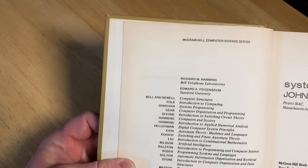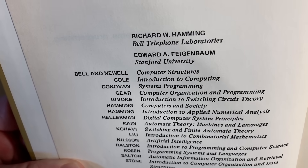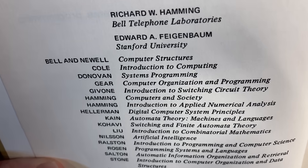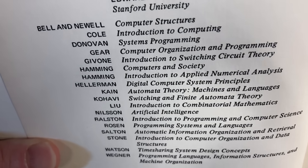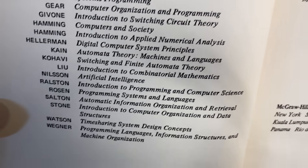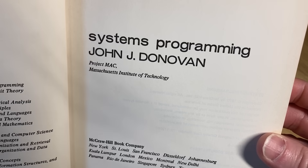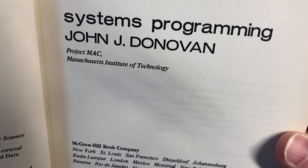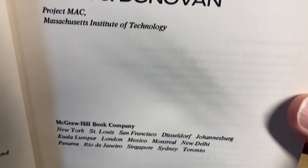Really old school systems programming. McGraw-Hill computer science series. Richard Hemming, Bell Telephone Laboratories. Edward A. Feigenbaum, Stanford University. We have some other books here in the computer science series. Systems programming, John J. Donovan, Project Mac, Massachusetts Institute of Technology — that would be MIT.